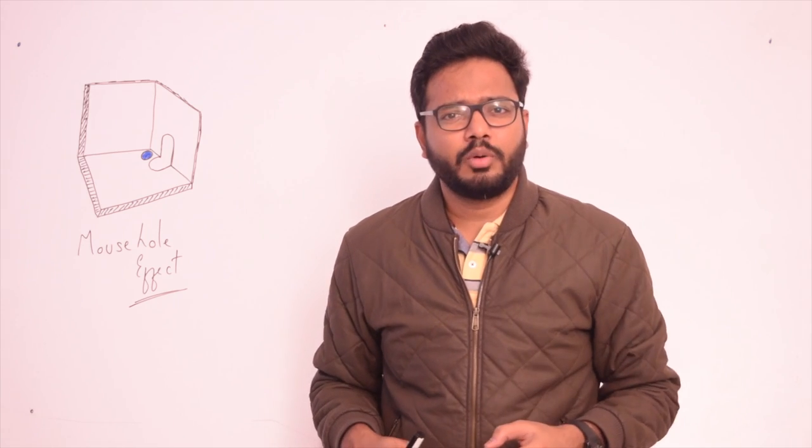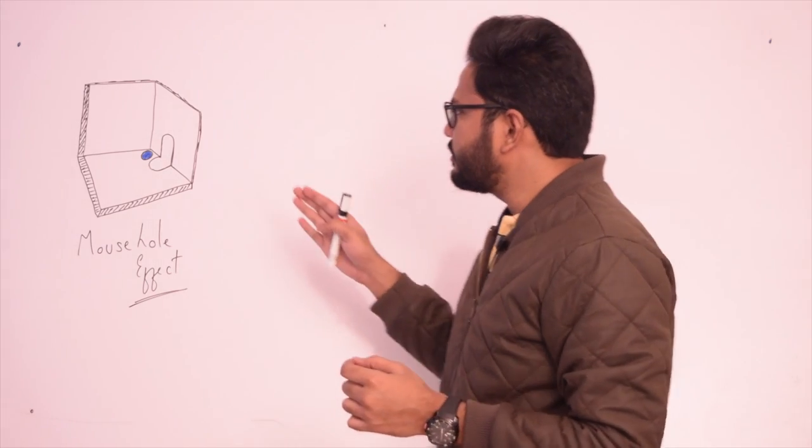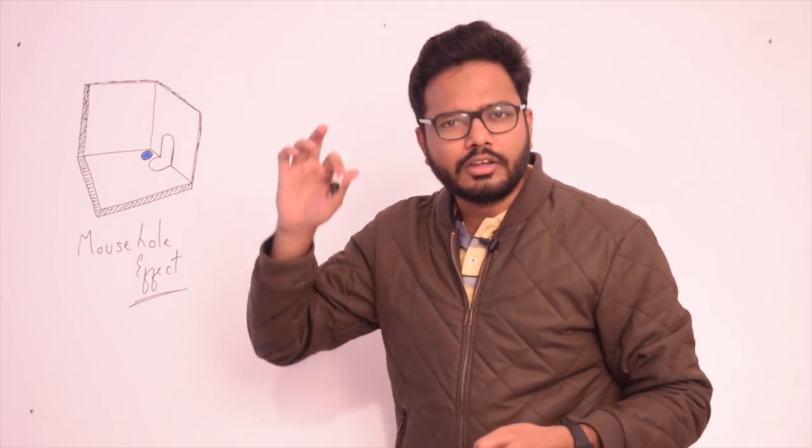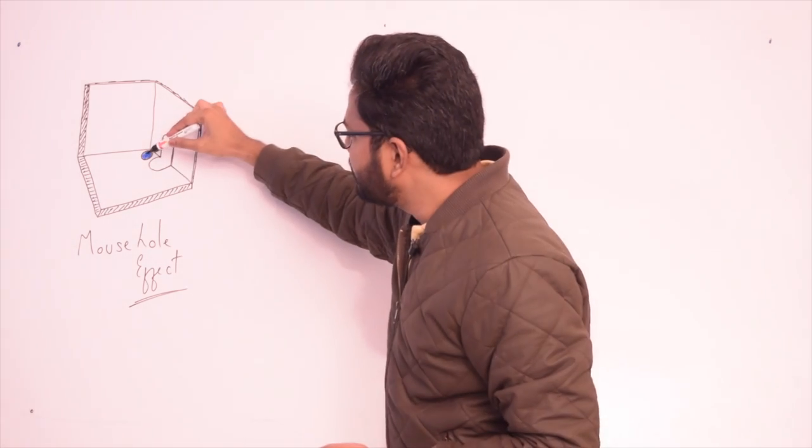This is very important and internally within the access cavity the root canal orifices are located entirely on the pulpal floor as you can see here, the blue one.